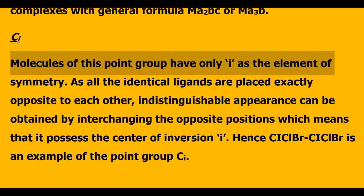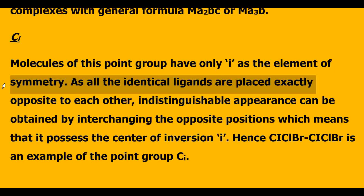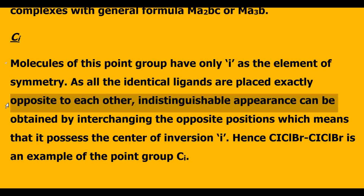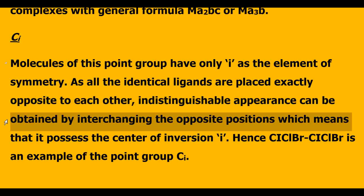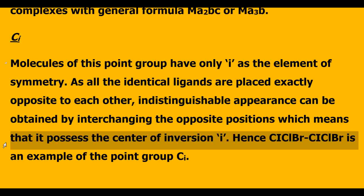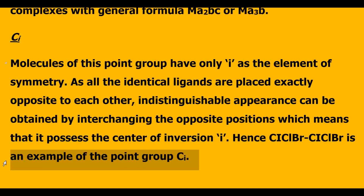Molecules of the CI point group have only I as the element of symmetry, other than E. This symmetry exists because all identical ligands are placed exactly opposite to each other, giving an indistinguishable appearance when opposite positions are interchanged. Hence, this compound — the substituted ethane with bromo, chloro, and iodo ligands — is an example of point group CI. In the next lecture, we will discuss a few more point groups. Thank you very much.